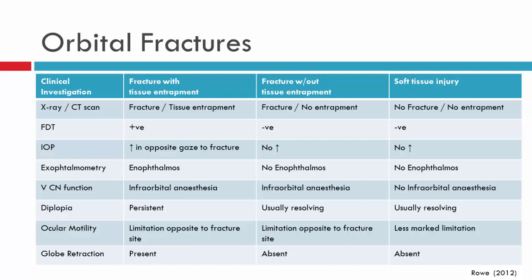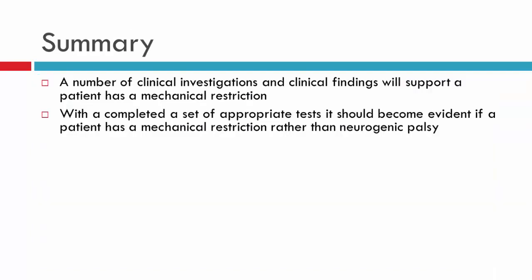Those with a fracture and specifically tissue entrapment will more readily show signs such as enophthalmos, positive forced duction, and globe retraction. With these clinical investigations you should be able to determine if you have a mechanical restriction versus a neurogenic palsy. These patients will also be scanned to confirm whether there are fractures, if there is prolapsed tissue, how many walls have been fractured, and which walls.